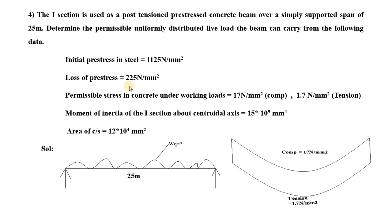Loss of pre-stress is 225 Newton per mm square. Permissible stress in concrete under working load is 17 Newton per mm square compression and 1.7 Newton per mm square tension. Moment of inertia of the I-section above the centroidal axis is 15 into 10 power 9 mm power 4. Area of cross section is 12 into 10 power 4 mm square.